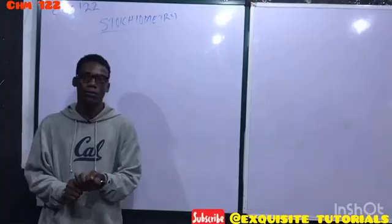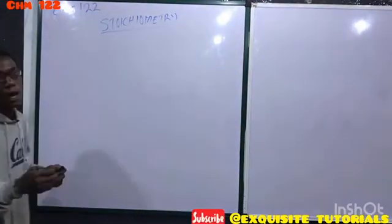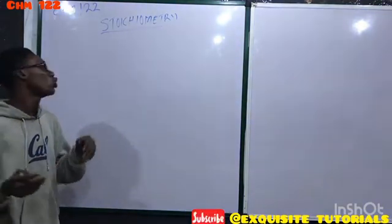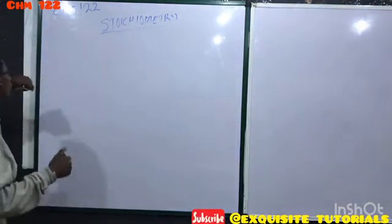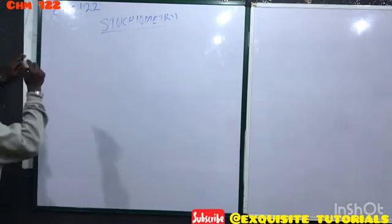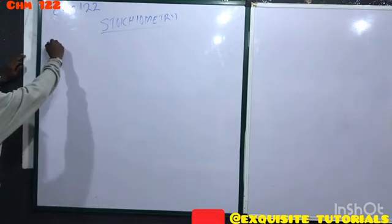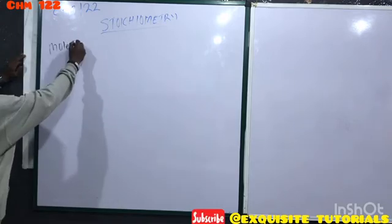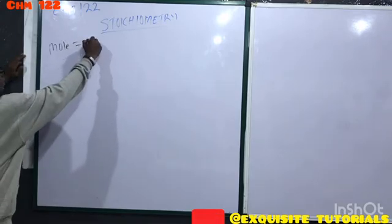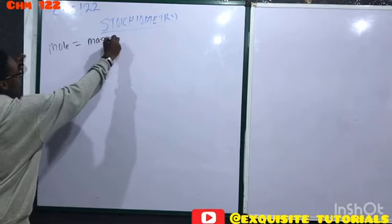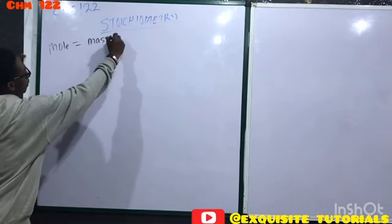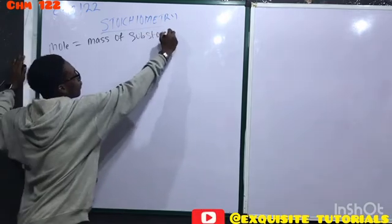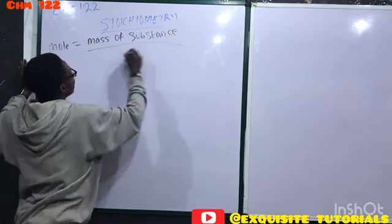I'm going to give you formulas to guide you on stoichiometry calculations. First, the mole of an element or compound equals mass of substance over molar mass.